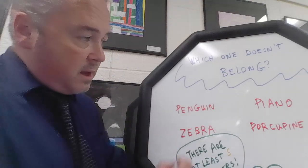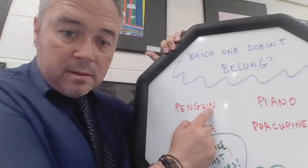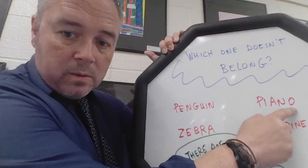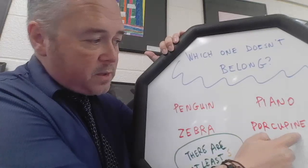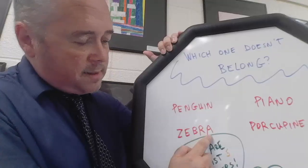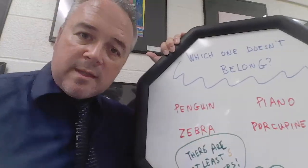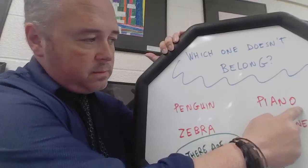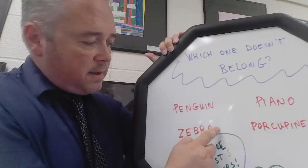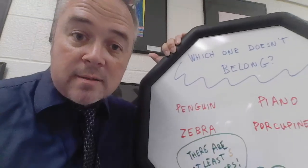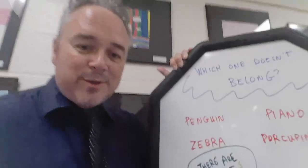You can also look at the last letter of the word. Penguin ends with N, piano ends with O, porcupine ends with E, and zebra ends with A. I'm noticing that the O, the E, and the A are all vowels, but the N is a consonant. So penguin doesn't belong because it ends in a consonant, not a vowel. That's one strategy for this game — think about the letters in the word and the way the words are spelled.